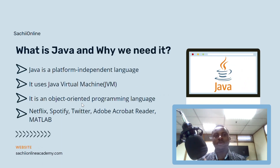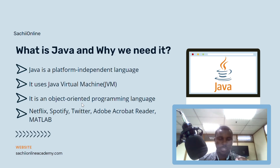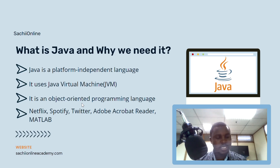Java is a platform-independent language. Why? Because of the Java Virtual Machine, or JVM. The JVM is a machine that doesn't physically exist — it mediates between the actual machine, the operating system, and the code. So if any machine has the Java Virtual Machine installed, you can run Java code on it. The JVM runs the compiled code.